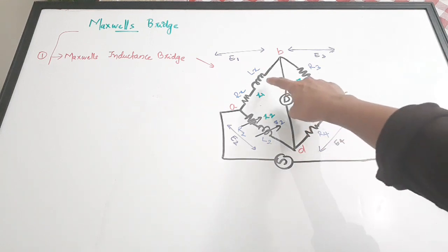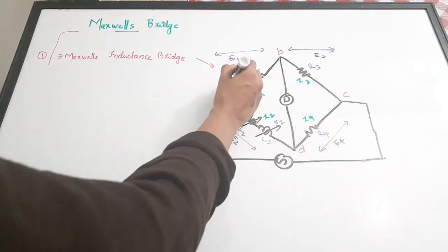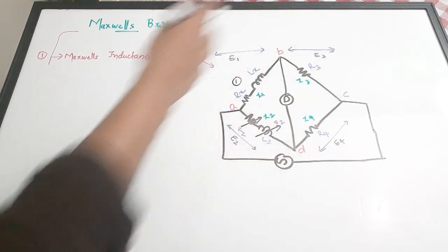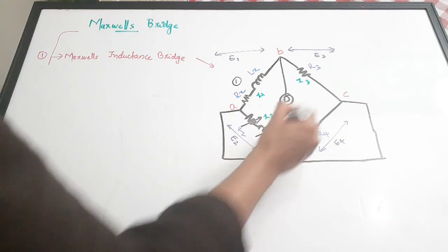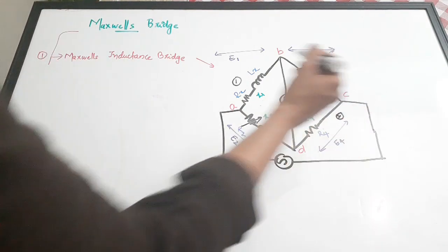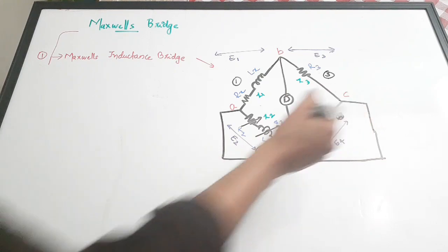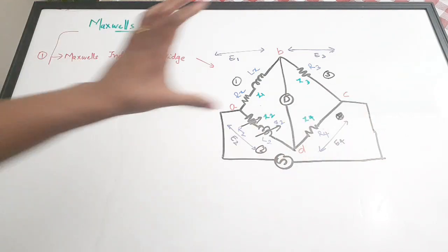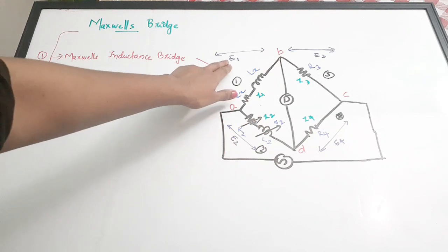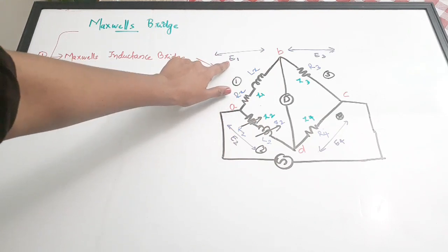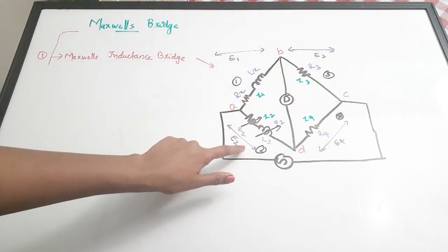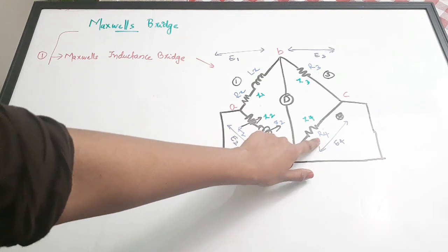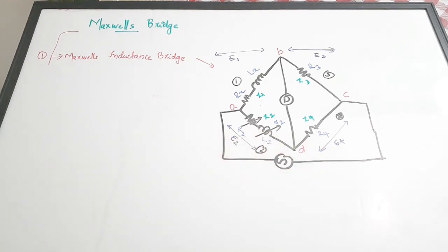In arm DA, there is a variable resistance R2 and a variable inductance L2. The inductance has an internal resistance marked as small r2, which is fixed. The total impedance of the DA branch is Z2. So these are the four arms, and the voltage drops across them are E1, E3, E2, and E4 respectively.